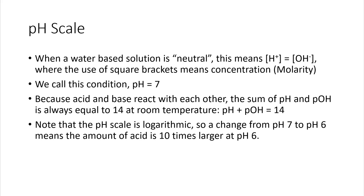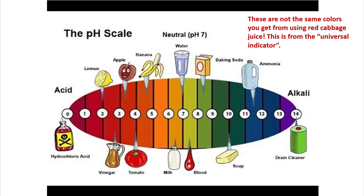Note that the pH scale is logarithmic, so a change from pH 7 to pH 6 means the amount of acid is 10 times larger at pH 6. Here is an infographic showing what sorts of materials have the indicated pH. The scale is zero at the low end for acidic compounds and high at the base end. Note that the colors in this infographic are from a mixture of acid-base indicators called universal indicator. Cabbage juice, like universal indicator, contains three different indicators but has a different color scheme.